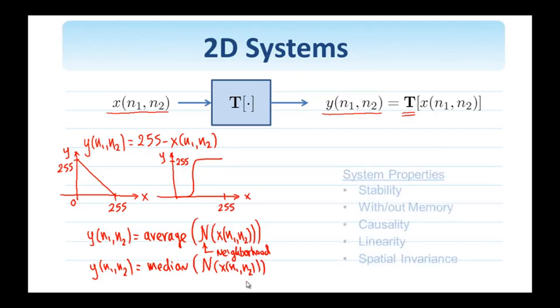When we talk about systems, we are interested in a number of their properties, some of which are mentioned here. We are interested in if the system is stable, whether it has memory or is memoryless, whether it's causal, whether it's linear, and whether it's spatially invariant. All these five listed properties are independent of each other. A system can have all of them, none of them, just one or two, and so on.